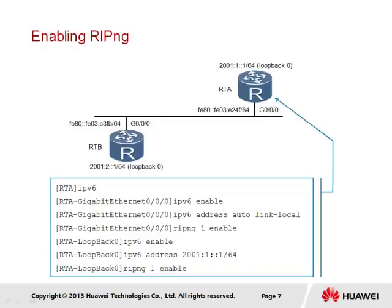To implement IPv6 routing protocols, we must first enable IPv6 support on the device running VRP. This is performed at the system view using the command IPv6. For each interface participating in IPv6, the command IPv6 enable must be configured at the interface view. We are then able to implement IPv6 addressing on enabled router interfaces. For interface GigabitEthernet 0/0/0 of RTA, we use the command IPv6 address auto-link-local to automatically configure an IPv6 link-local address, resulting in the assignment of FE80::FE03:E24F.